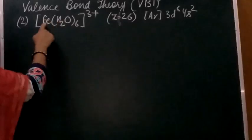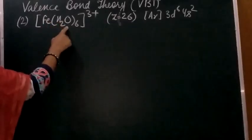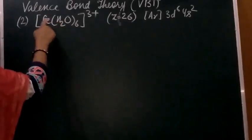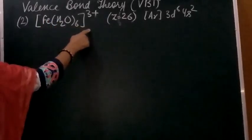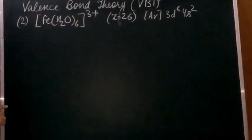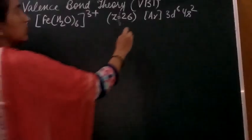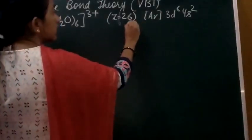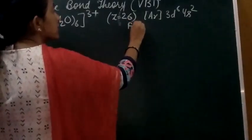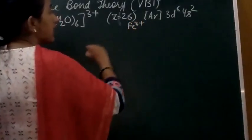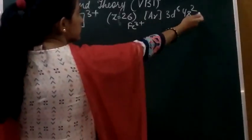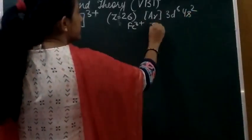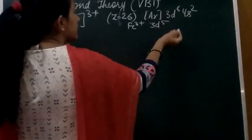Now, what is the oxidation state of iron here? Since the complex is [Fe(H₂O)₆], H₂O is neutral, so x + 0×6 = +3. We get Fe³⁺. If we write down the electronic configuration of Fe³⁺, it will be 3d⁵, since we remove electrons from 4s and then 3d.